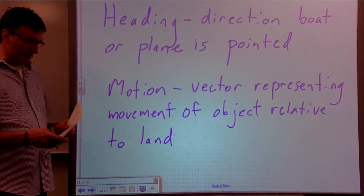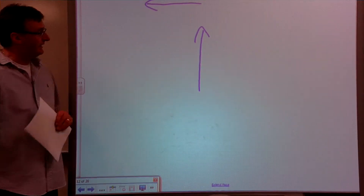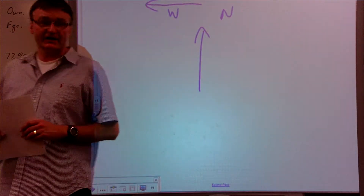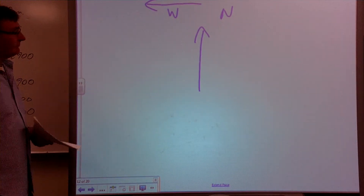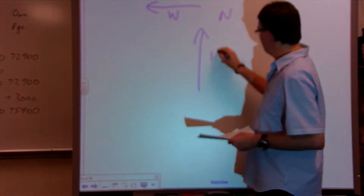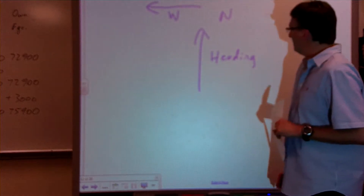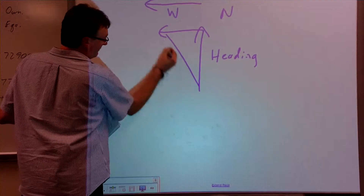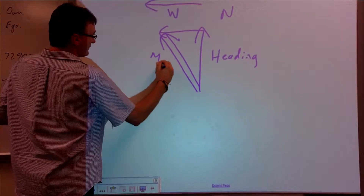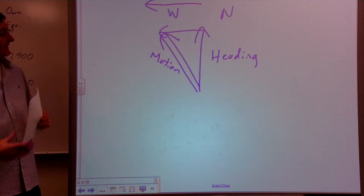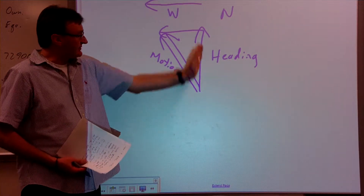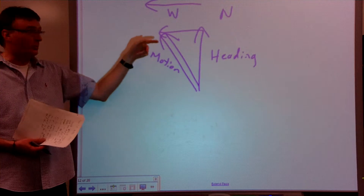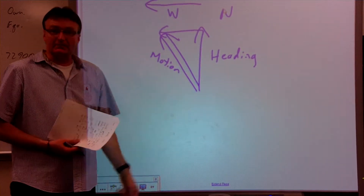Let's say for example we have an airplane traveling due north and it's experiencing a wind directly west. In order to determine the actual relative motion of the airplane, we start with its heading — that vector pointing north. But now you have to add the wind vector to it as well, and so its actual motion will be the resultant vector. That resultant represents its motion relative to land. So the heading is the direction the plane or boat is pointed, while the motion is when you add the current or wind vector to the heading.